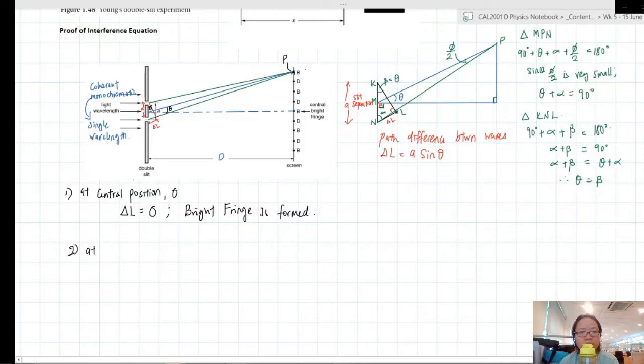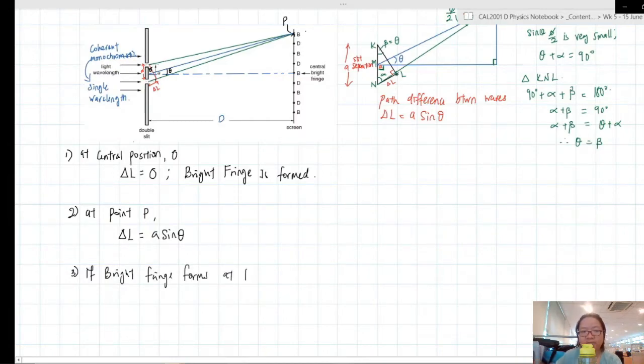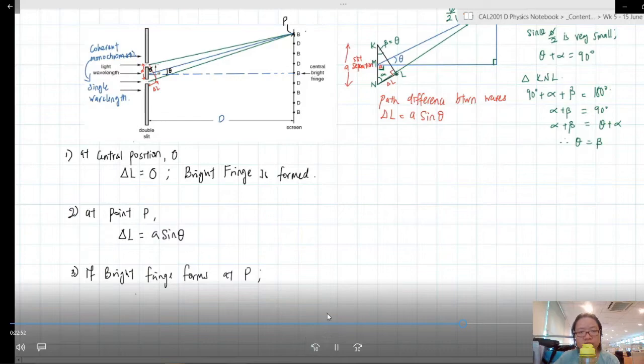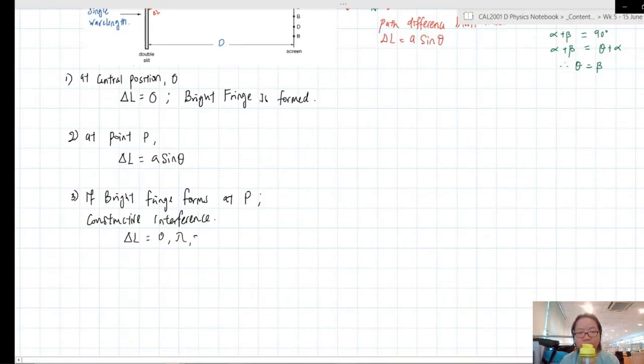And let's say we take at point P, where the wave meets, some random arbitrary point on top. So your delta L here is A sine theta. And the second thing to look at, is that you will have a bright fringe. If a bright fringe is to form at P, and what this means is that, if there's constructive interference, then your delta L, if you remember, 0, lambda, 2 lambda, n lambda, so I will say, A sine theta is n lambda.